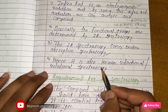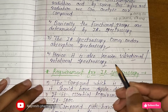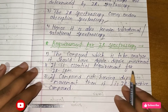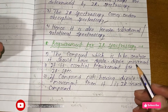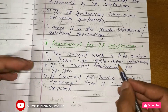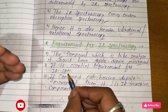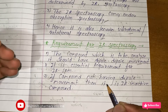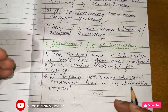IR spectroscopy is also known as vibrational or rotational spectroscopy. Let's see the basic requirements for performing IR spectroscopy. While performing IR, your compound should have a dipole moment — this is an essential requirement. If your compound does not have a dipole moment, then it is called an IR-inactive compound.